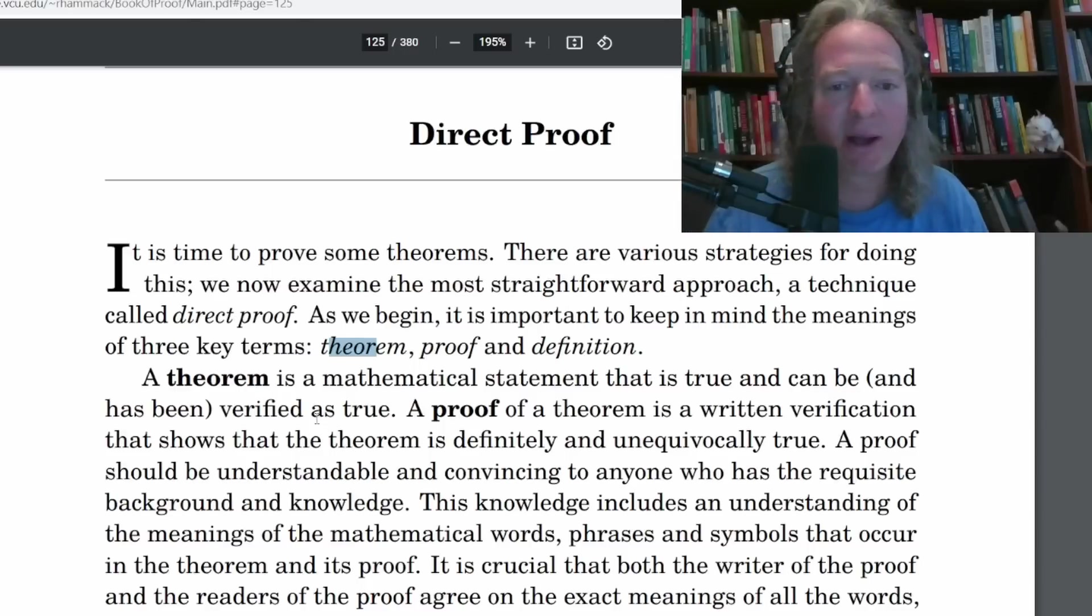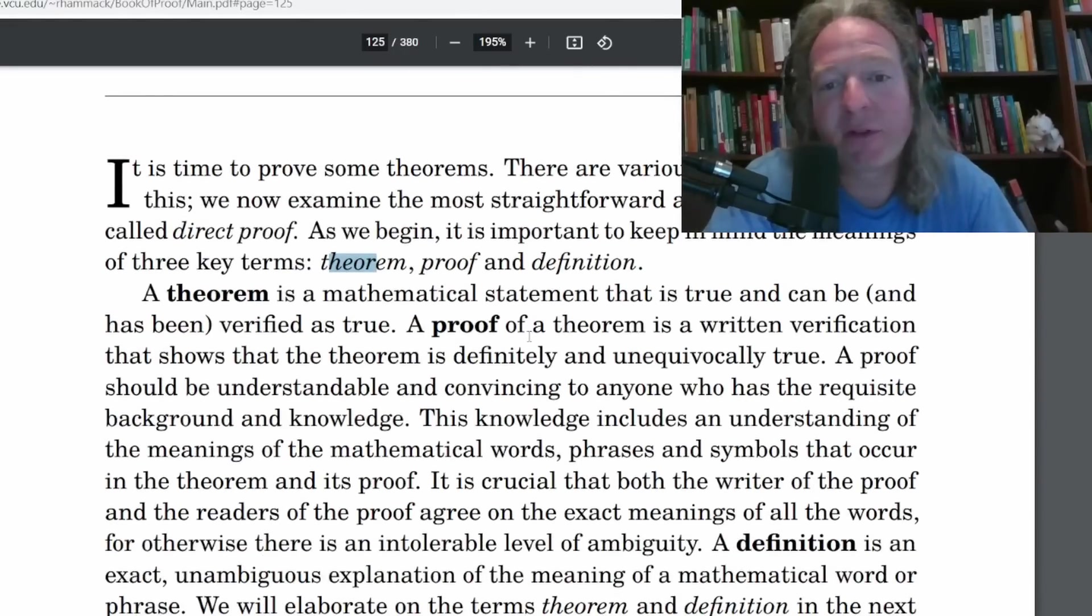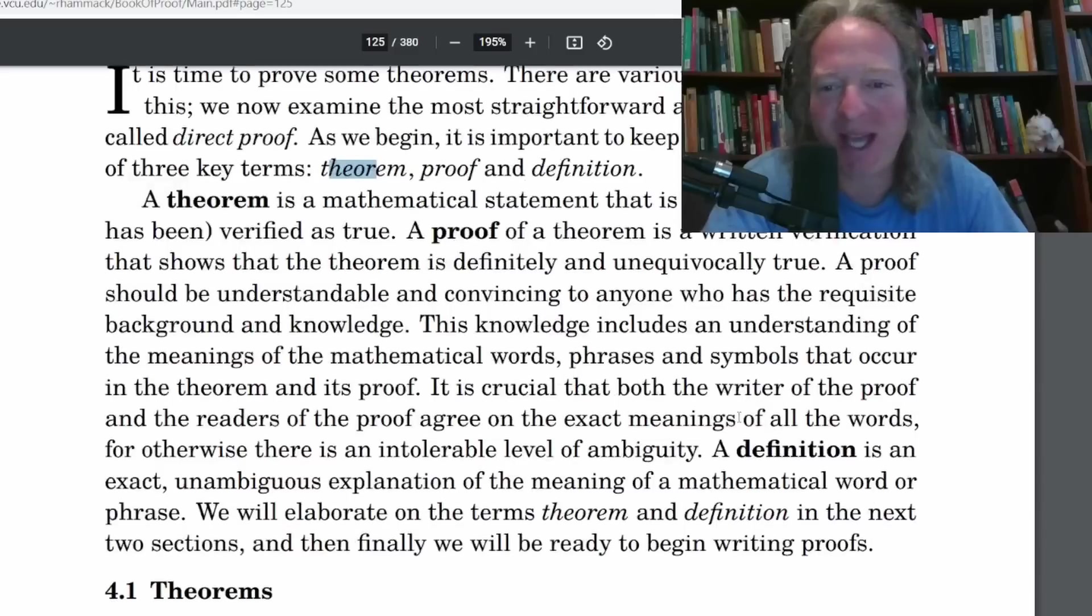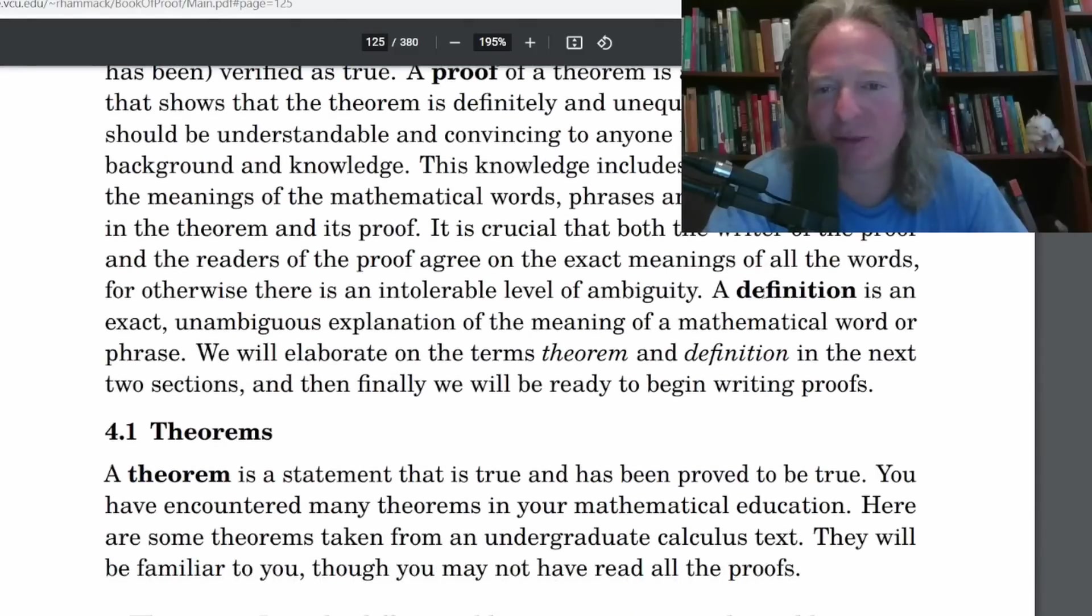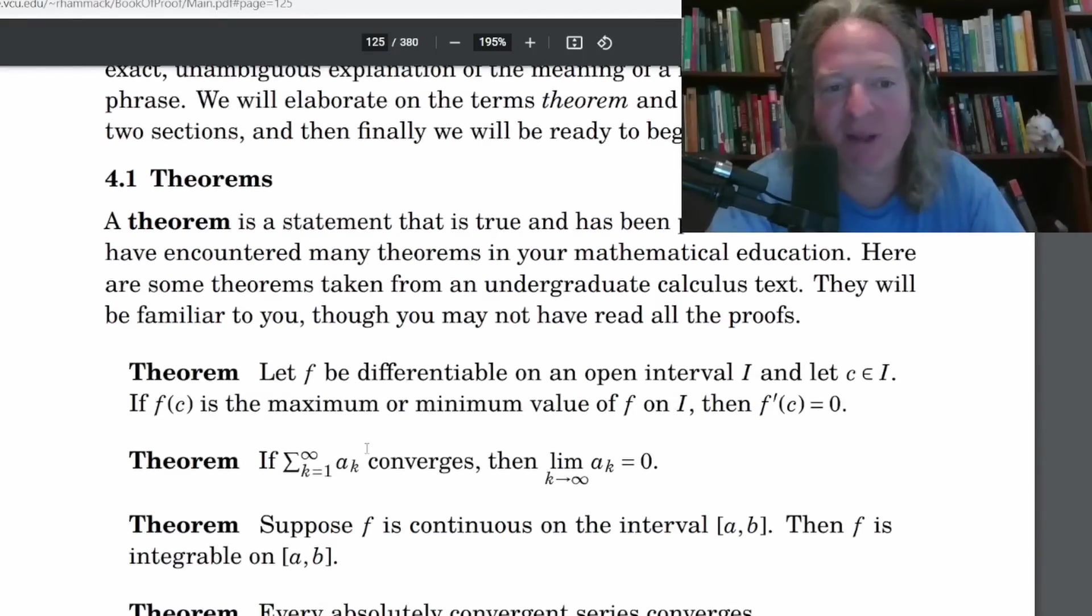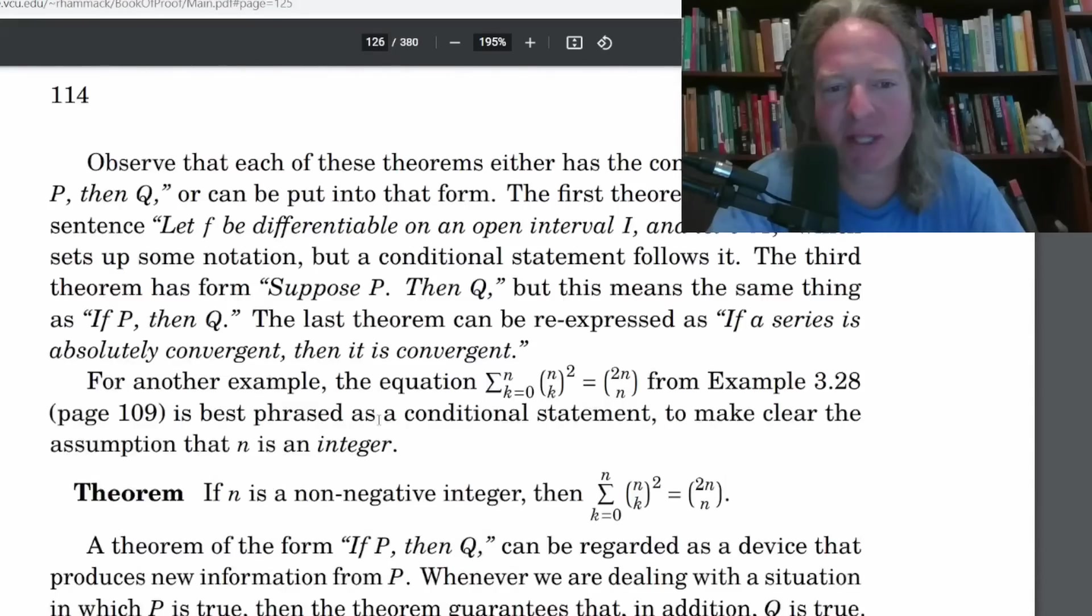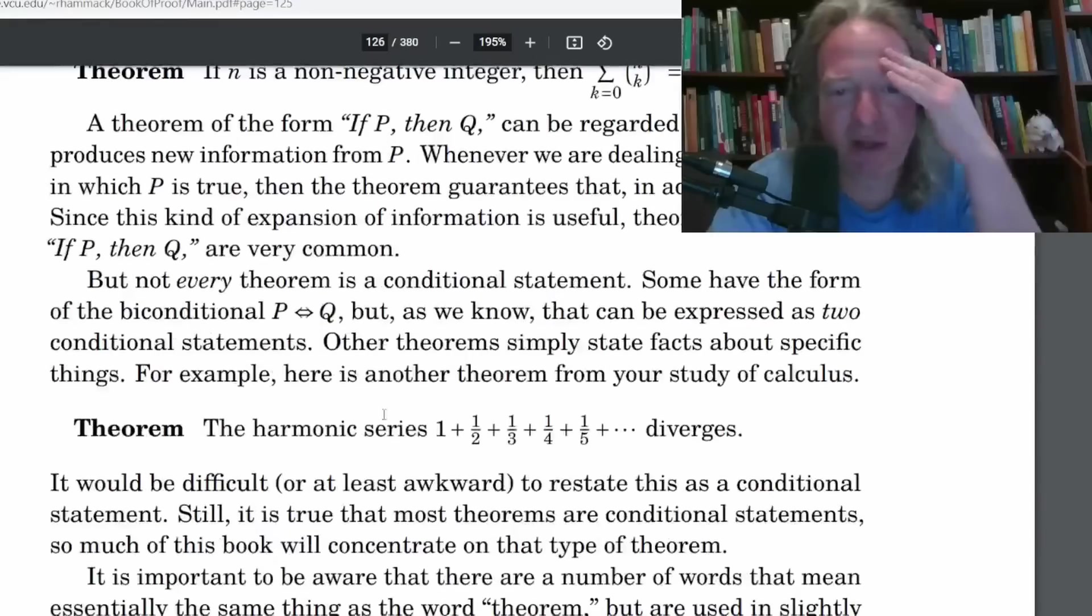Here he talks about the meanings of three terms: theorem, proof and definition. A theorem is a mathematical statement that is true and can be and has been verified as true. Theorem is reserved for big things like the fundamental theorem of algebra, the fundamental theorem of calculus, Taylor's theorem. A proof of a theorem is a written verification that shows that the theorem is definitely and unequivocally true.